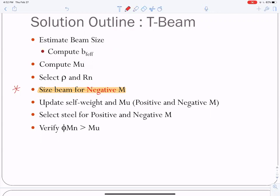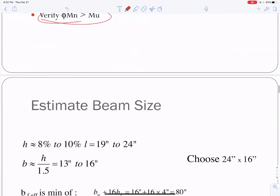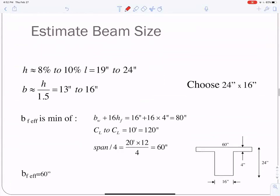And once we size it, this estimate might have been wrong, so we need to update the self-weight and recalculate the moments. This will be both for the positive and negative moments. Then we'll proceed to select the steel and finally verify that we did everything right. Phi M N greater than M U. Estimating the beam size.